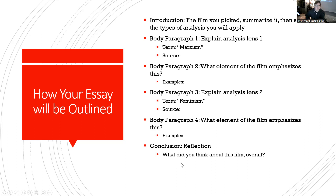For the conclusion, reflect on what you thought about the film overall. In the outline you can just write one sentence — 'I liked it,' 'I didn't like it,' 'it was crazy' — whatever. That one line is essentially the basis for your full conclusion paragraph. In your actual paper, the introduction and conclusion will each be a full paragraph. But in the outline, the introduction just needs the film title and the two lens types, and the conclusion just needs that one sentence — which you'll then expand into a paragraph in the essay.